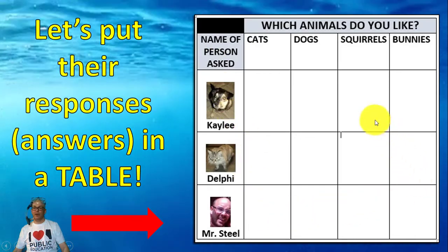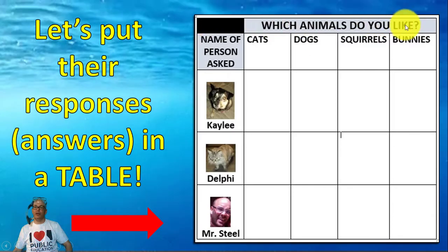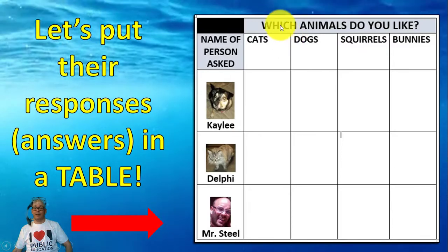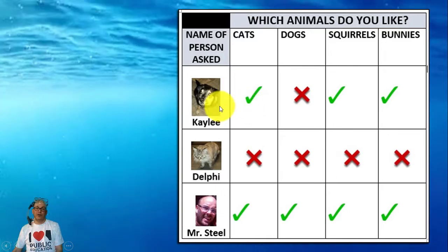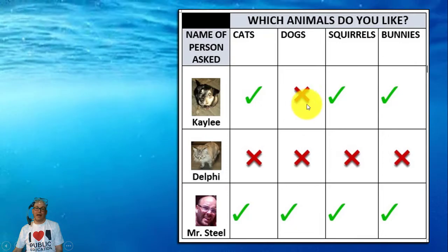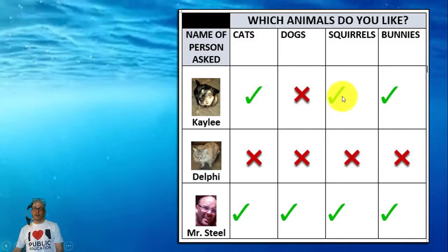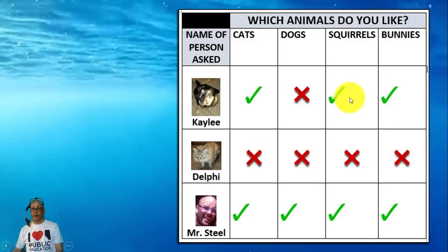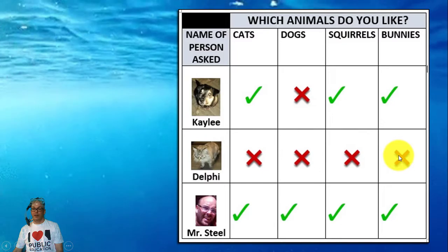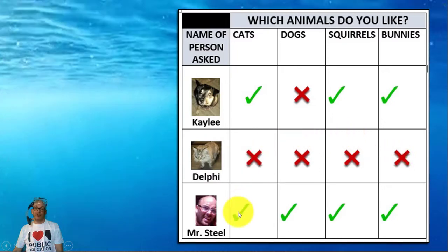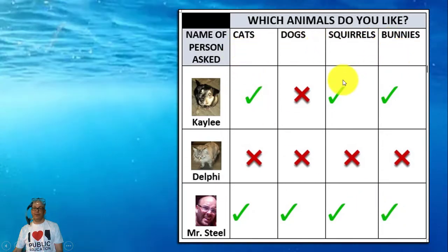Let's put their responses or answers in a table. Here's our table. What's the title of this table? The title is 'Which animals do you like?' — that's the question the baby asked. Kaylee likes cats, but she does not like other dogs. She loves squirrels and loves bunnies. Delphi the cat hates everything — she doesn't like anything. And Mr. Steele likes all these animals: cats, dogs, squirrels, and bunnies.